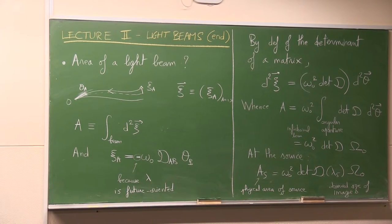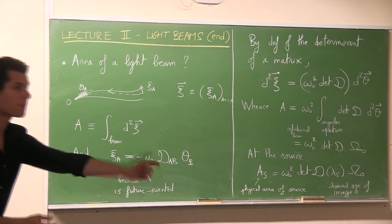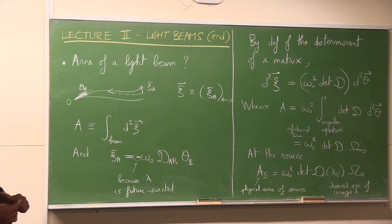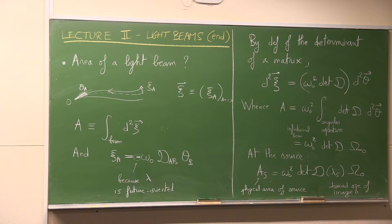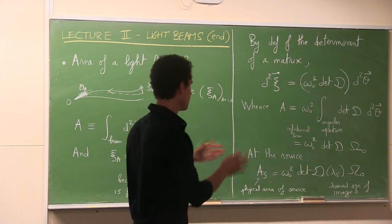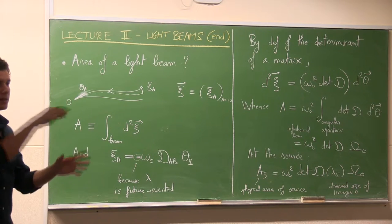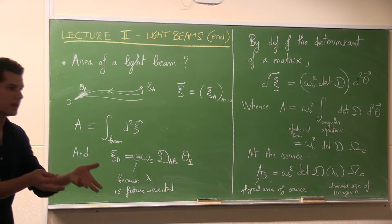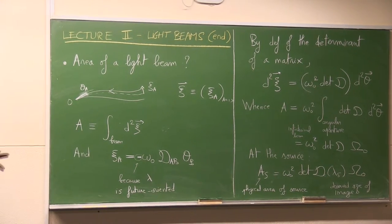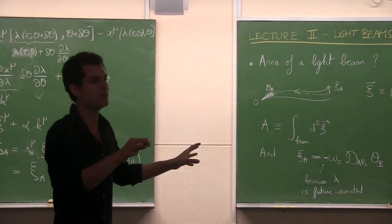The Jacobi relation uses the definition of the determinant in the same way as a change of variable in a multidimensional integral. When doing a change of variable from xy to uv, the Jacobian determinant translates the change of volume between dx dy and du dv. With a linear map from xy to uv, du dv equals the determinant of the map times dx dy — that's the ratio of areas.